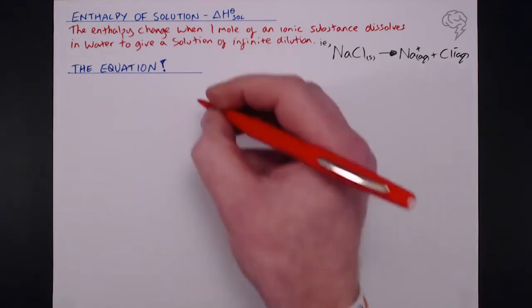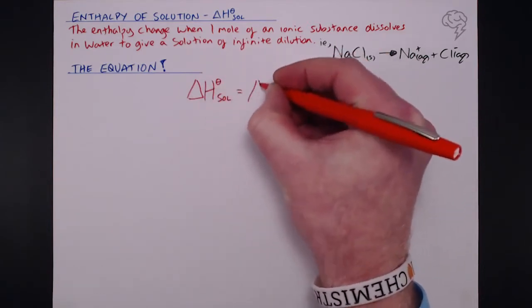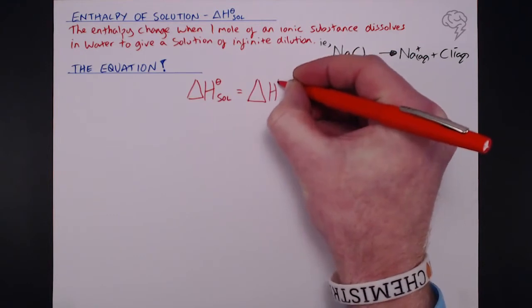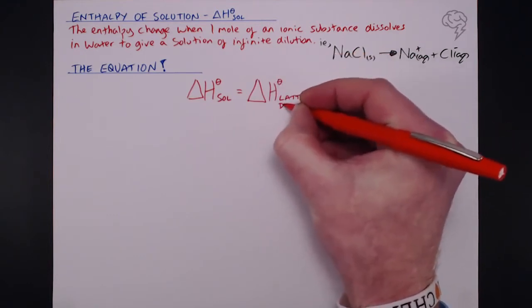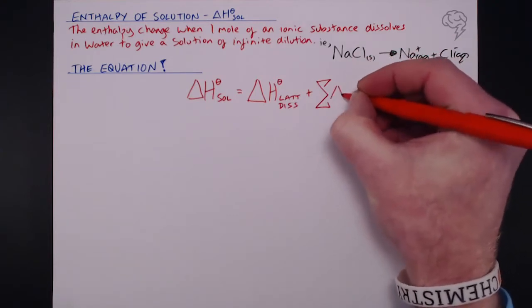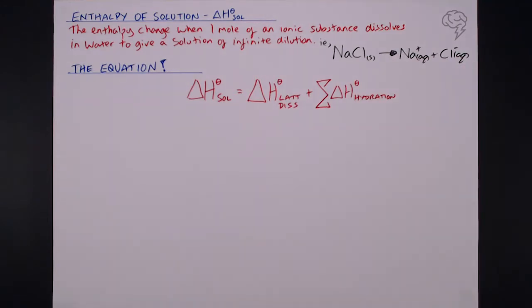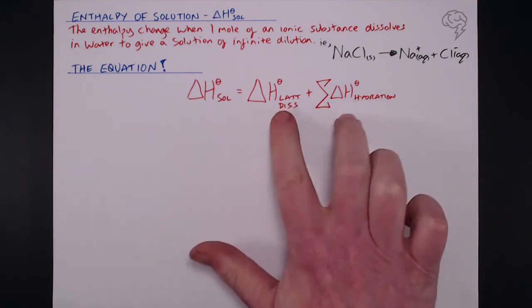So the delta H solution of a salt equals the delta H lattice dissociation. So we're breaking that lattice into its gaseous ions. We've come across this before in Born-Haber. But that's plus the sum of the delta H hydrations of the ions. So we'll talk about what these two mean now. So we're going to calculate delta H sol, but what do these two mean?